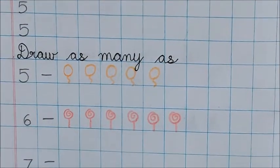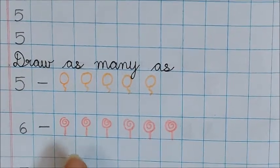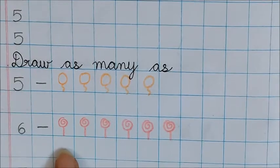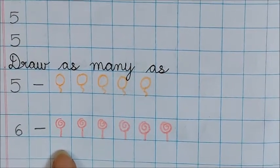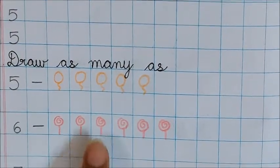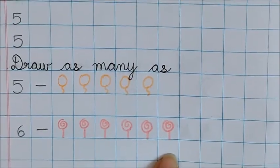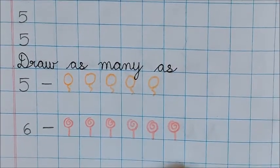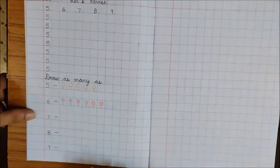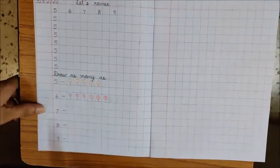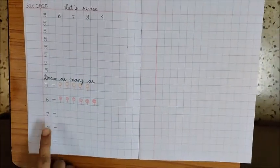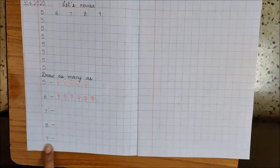After drawing you must count to check whether you have drawn that many objects or not. 1, 2, 3, 4, 5, 6. So for number 6 I have drawn 6 lollipops. So children like this you will draw objects for number 7, for number 8 and for number 9.